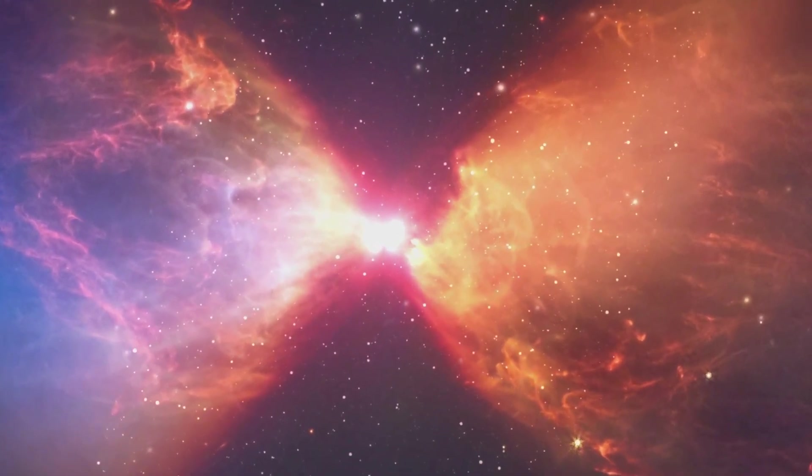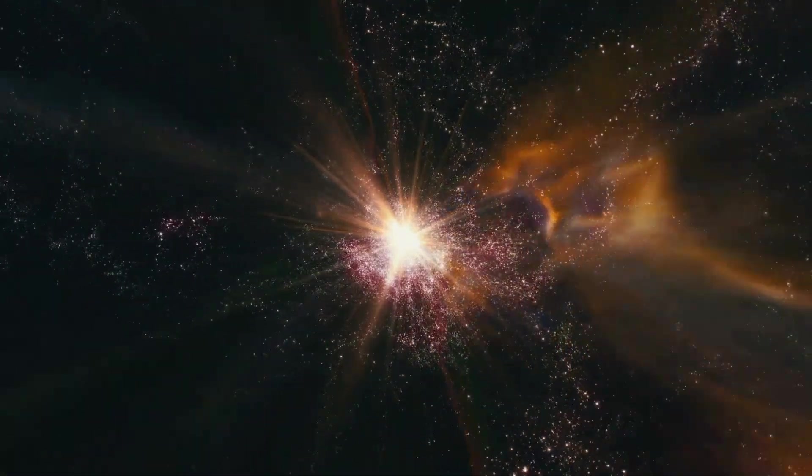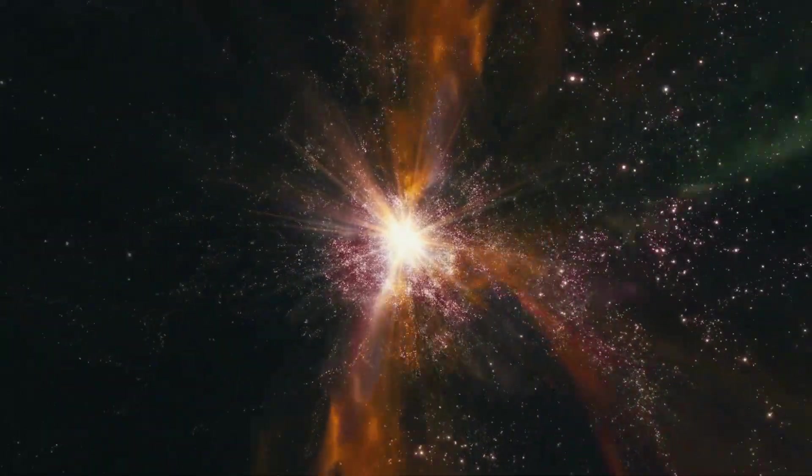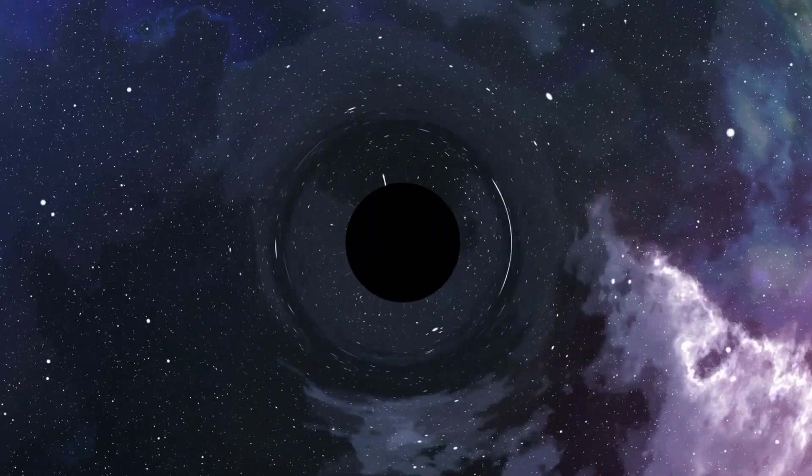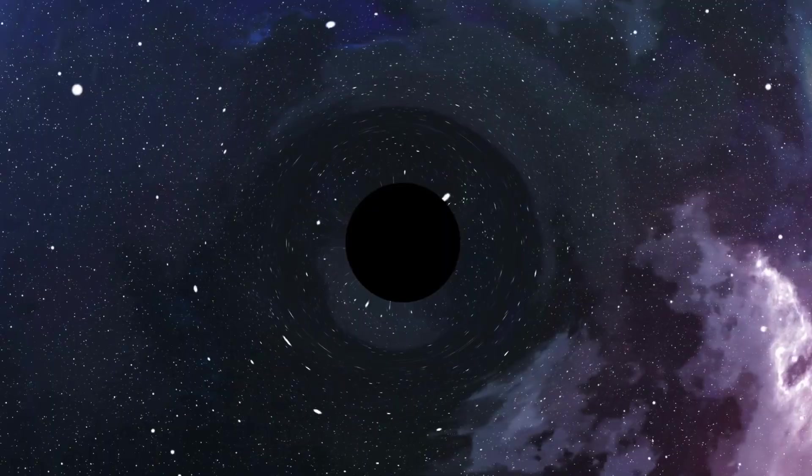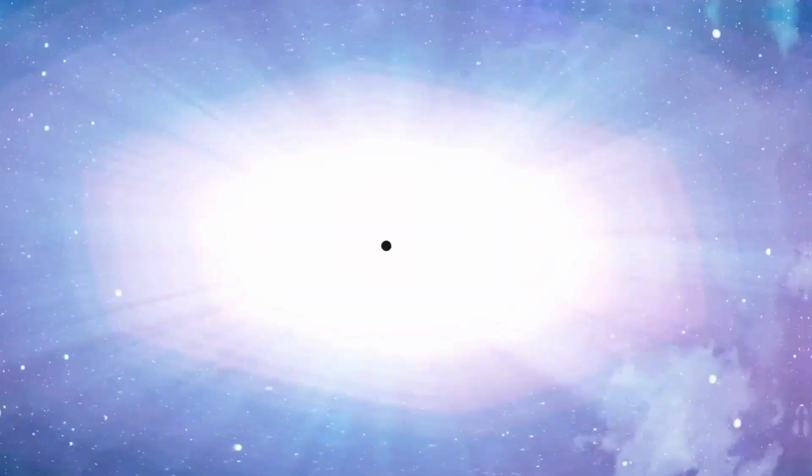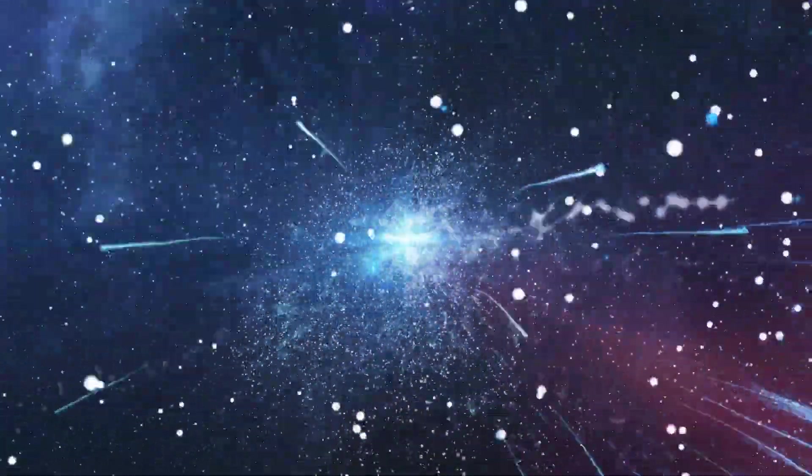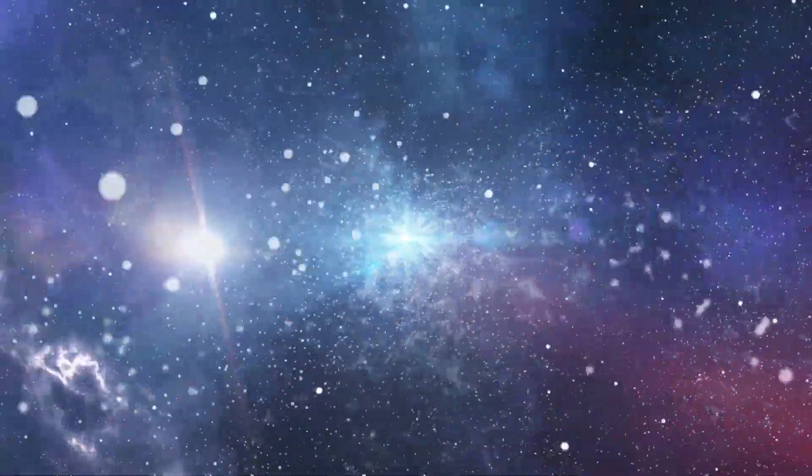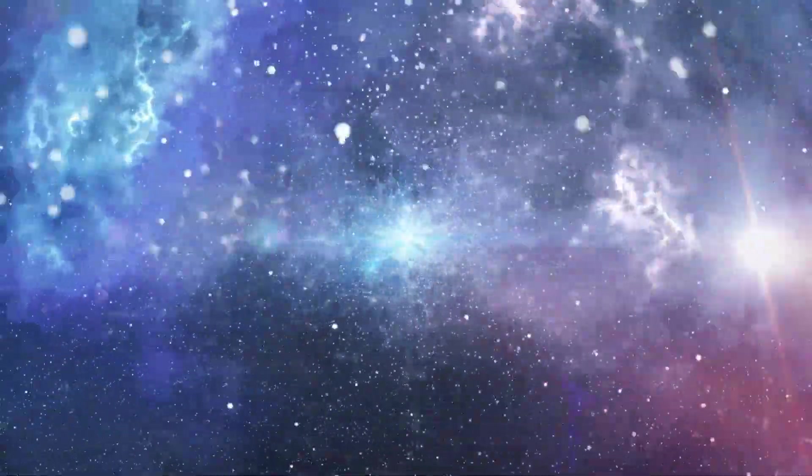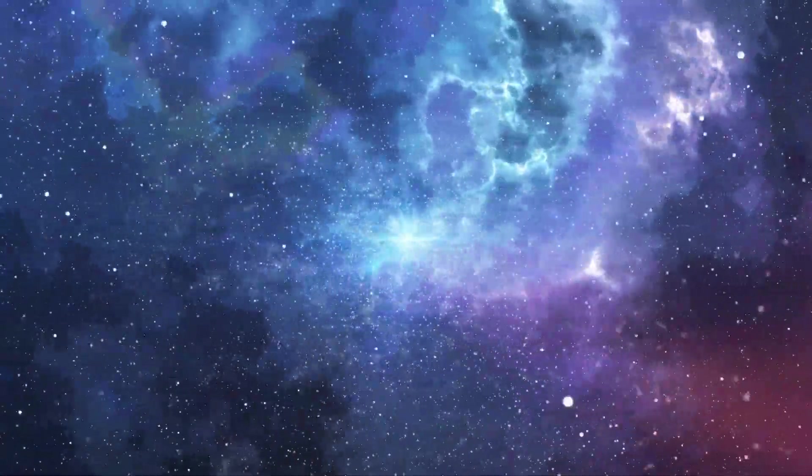For stars much larger than our sun, this is where the plot thickens. When these massive stars burn out, they don't go quietly into the night. Instead, they go out with a bang in a colossal explosion known as a supernova. The core of the star collapses under its own immense gravity, while the outer layers are violently ejected into space.